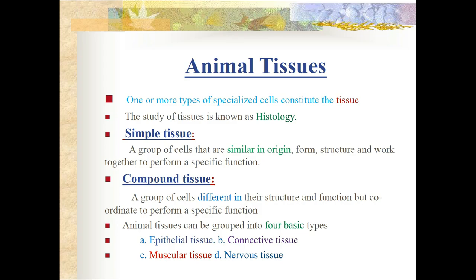What is a simple tissue? A group of cells that are similar in origin, form, and structure, and work together to perform a specific function - that is a simple tissue. What is a common tissue? A group of cells different in structure and function but they coordinate to perform a specific function. Animal tissue can be grouped into four types: epithelial tissue, connective tissue, muscular tissue, and nervous tissue.